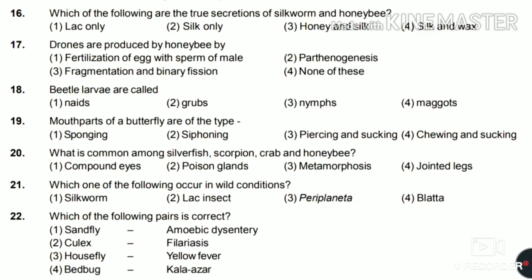Twenty-first: which one of the following occurs in wild conditions — silkworm, lac insect, Periplaneta, or Balata? The answer is lac insect, as lac insect is present in nature in wild conditions only. Twenty-second: which of the following pairs is correct — sandfly and amoebic dysentery, Culex and filariasis, housefly and yellow fever, or bat bug and kala-azar? The answer is Culex and filariasis. That's all from this phylum, thank you.